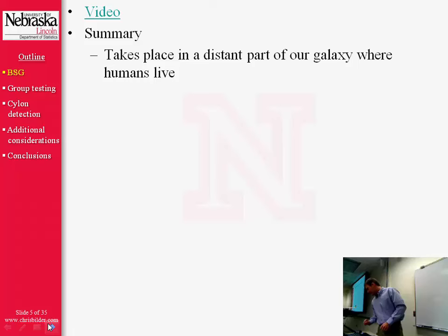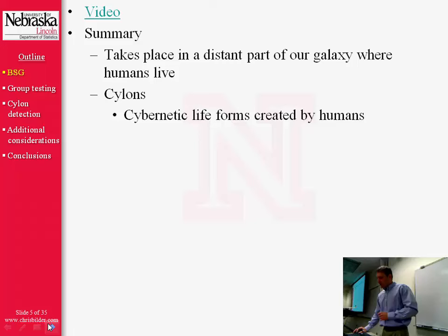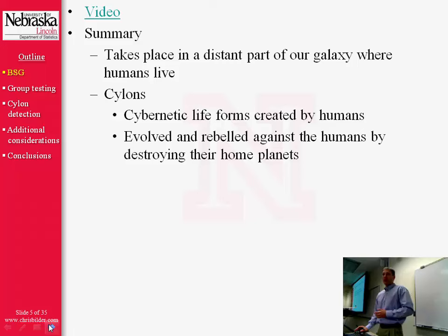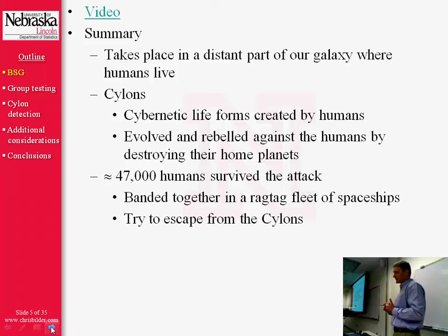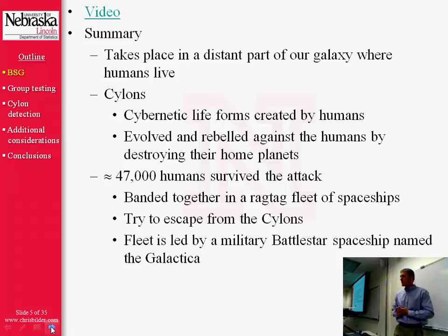Battlestar Galactica is set in a distant, far-off corner of our galaxy where humans live. These humans developed things called Cylons — cybernetic life forms originally created to be servants. These Cylons eventually evolved on their own and rebelled against the humans by destroying their home planets. In the end, only about 47,000 humans survived the attack, and they all banded together in a ragtag fleet of spaceships trying to escape. The fleet is led by a military Battlestar spaceship named the Galactica — and that's where the name comes from.